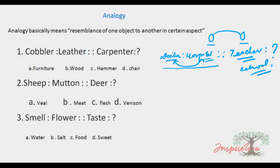Now question 2: Cobbler, colon, Ladder, double colon, Carpenter, colon, question mark. The options are: Furnisher, Wood, Hammer, Chair. A Cobbler uses a Ladder. Similarly, a Carpenter uses Furnisher. So the answer is option B — Furnisher.